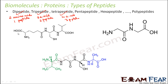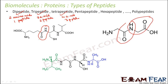Let us look at some examples. Here you have one amino acid and another amino acid with one peptide bond between them — this is an example of a dipeptide, because two amino acids are joined by one peptide bond. Looking at the next example, there is just one peptide bond joining the two amino acids — this is also a dipeptide.